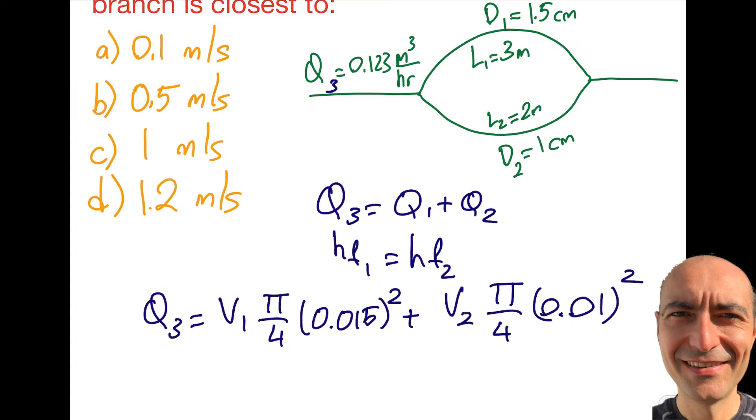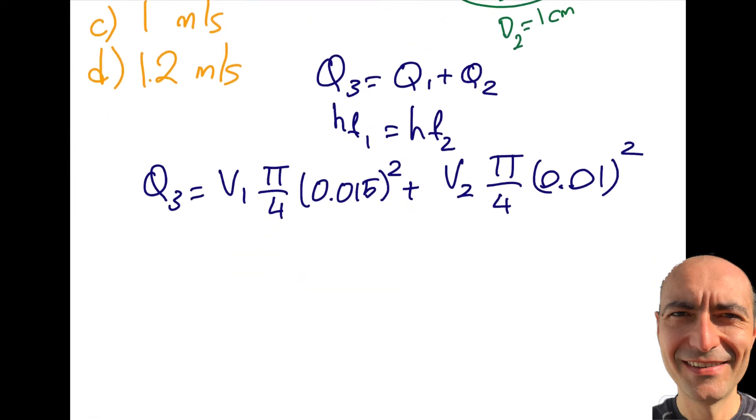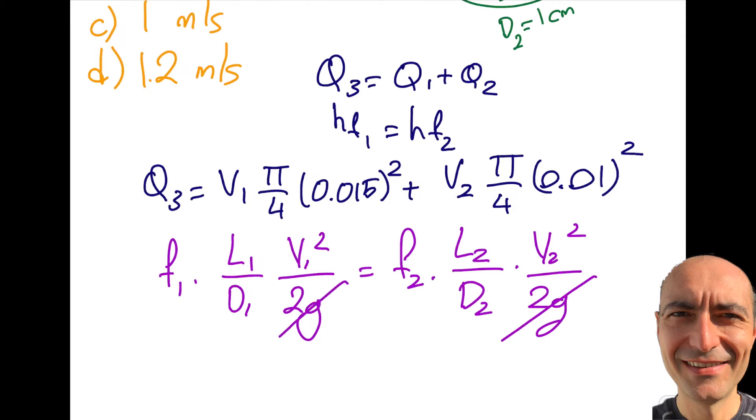Here is my recommendation: I would like you to stop right here and look at the second one, because potentially I can get the relation between V1 and V2 and replace one of them so I can reduce the number of unknowns in the equation to one. This hf is given to me as f1 times L1 over D1 times V1 squared over 2g will be equal to f2 L2 by D2 V2 squared by 2g. The 2g's cancel each other.